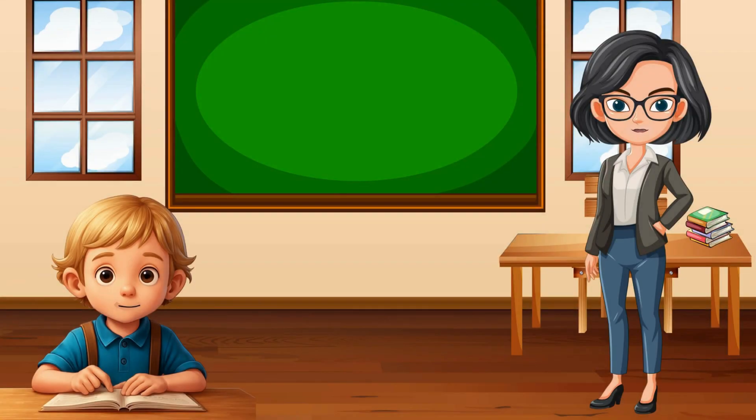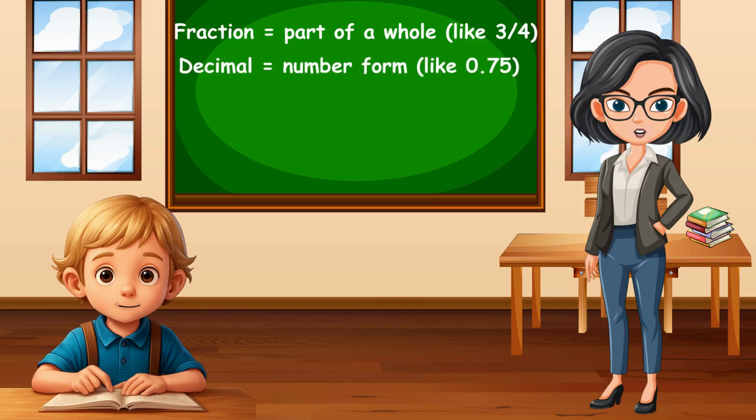Let's do a quick recap. Fraction equals part of a whole, like three-quarters. Decimal equals number form, like 0.75. Percentage equals out of 100, like 75 percent. They're just three ways to say the same thing.